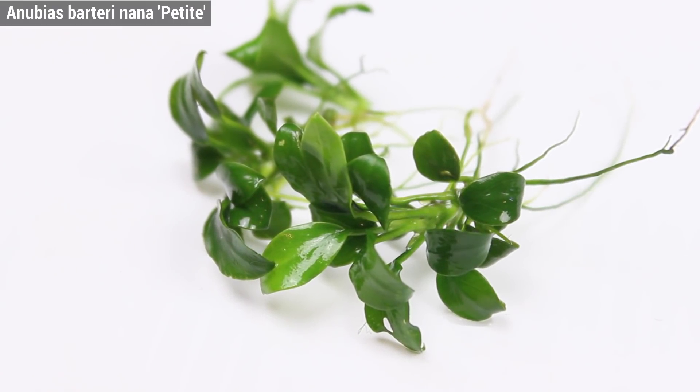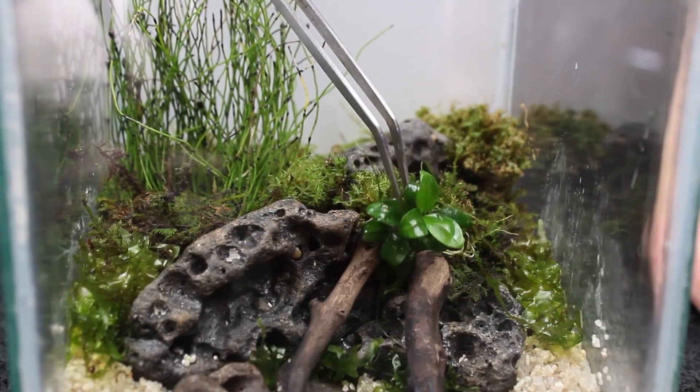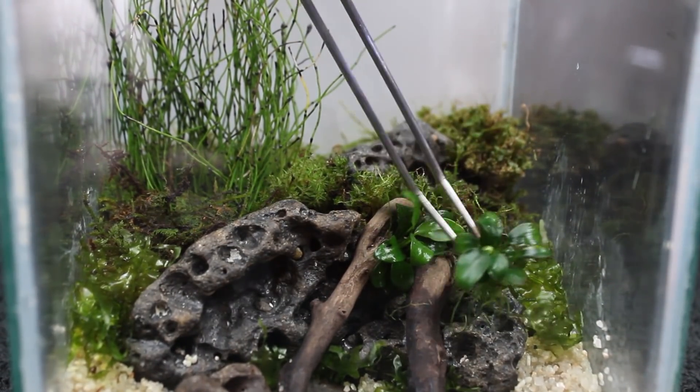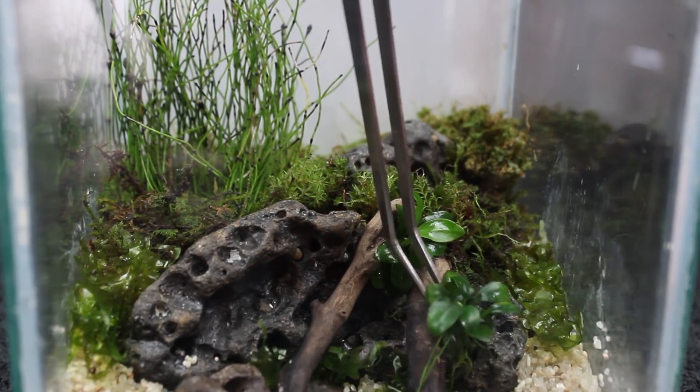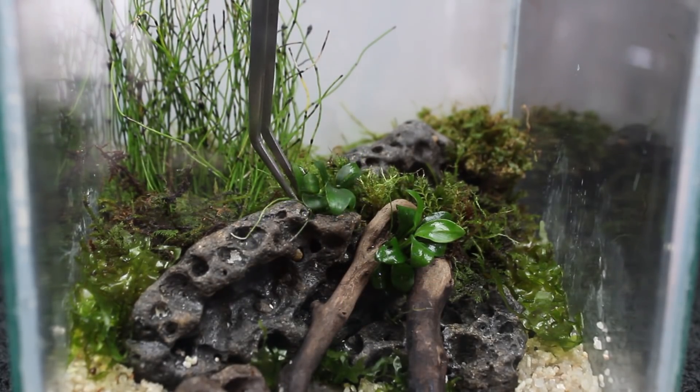Then I got a few sections of Anubias Nana Petite. Although this is typically sold as an aquatic plant, it's not a true aquatic plant and will actually grow really well out of water given enough moisture. I planted these as transition elements as well, but they will be primarily emerged.